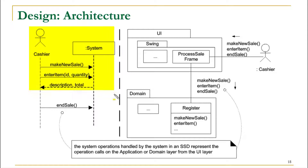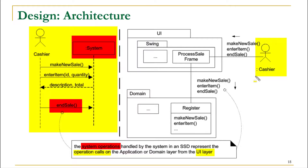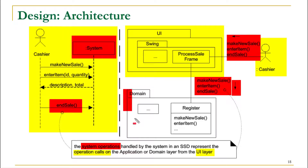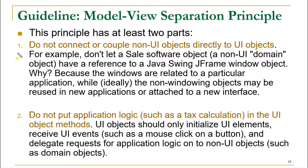In the system sequence diagram, the system operations that were handled by the system actually represent operation calls on the application or domain layer from the UI layer. When a cashier calls these operations, they are actually calling them on the UI, and the UI further passes these operations to the domain layer, where the corresponding concept has the functionality defined in it.